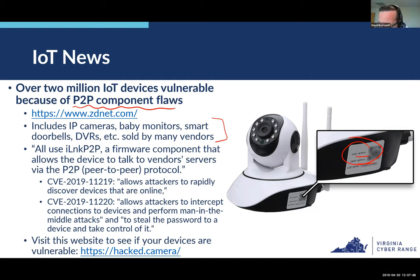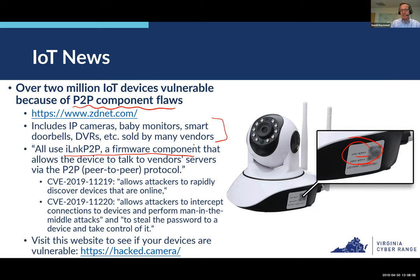This particular vulnerability is actually two vulnerabilities in a firmware component — a piece of hardware with code embedded on it. Devices from different brands like Samsung and GE may use the same firmware. This particular component is used by many vendors' products including IP cameras, baby monitors, smart doorbells, and DVRs. You can see a list of vulnerable companies in the article.